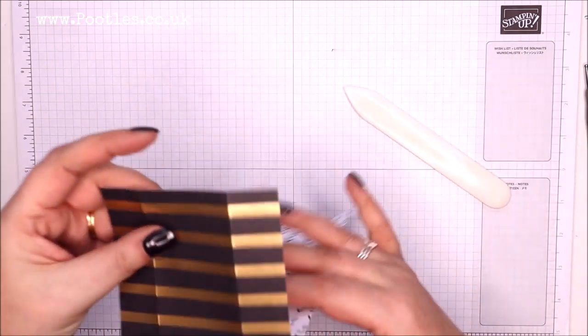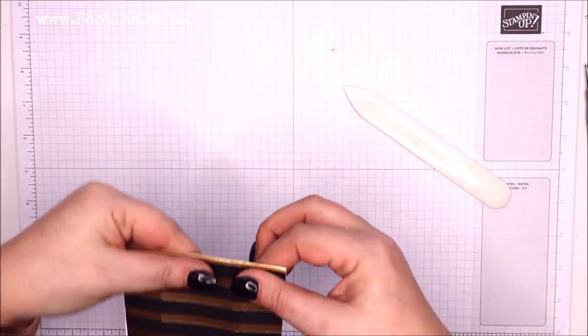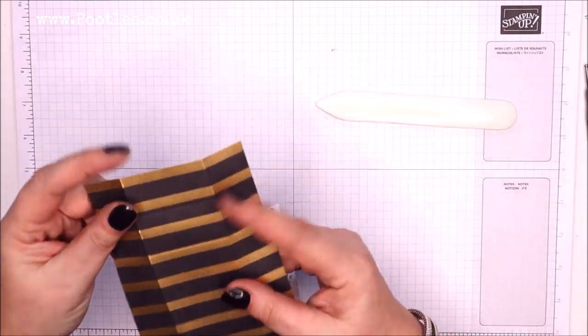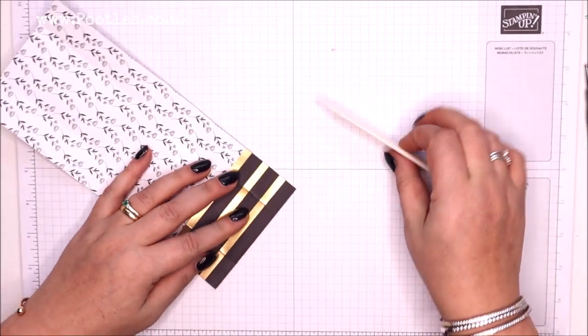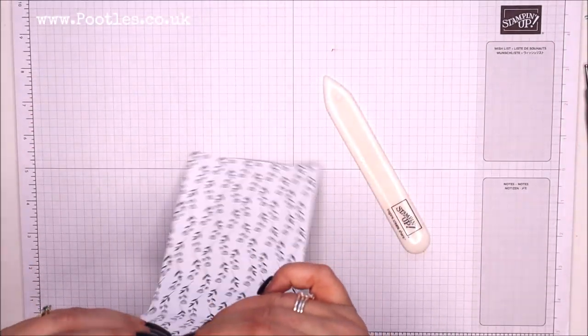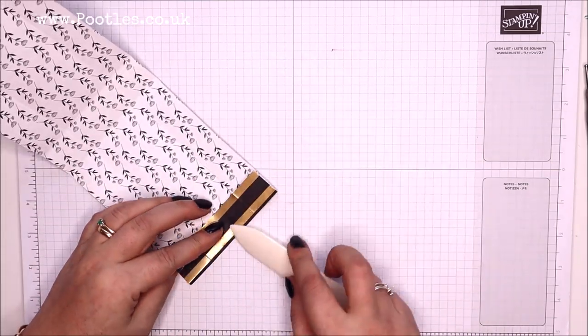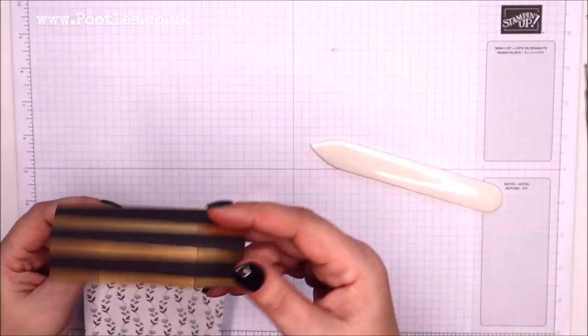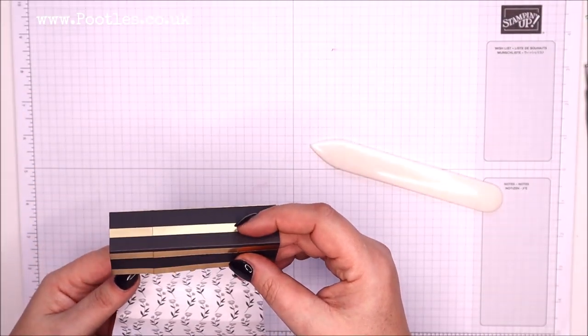I like this style of box because you can get three from a sheet of paper, which means these are great favor boxes. If you've got a wedding or a birthday party, if you've got one pack of designer series, you're getting thirty-six from it with no problems whatsoever.